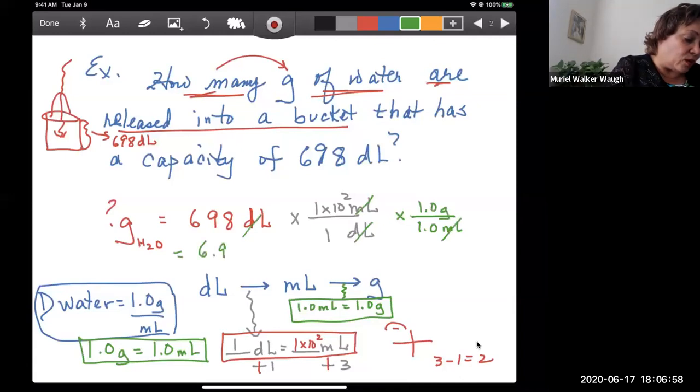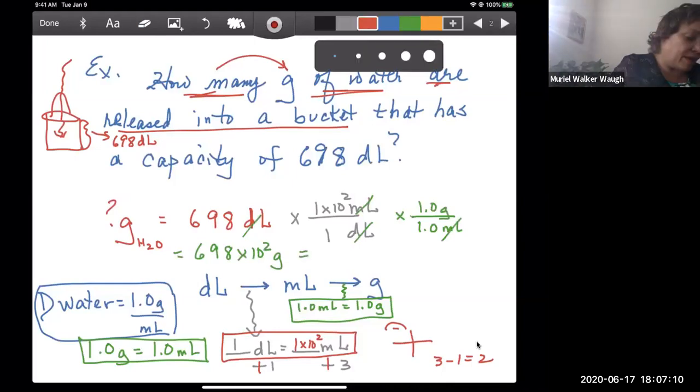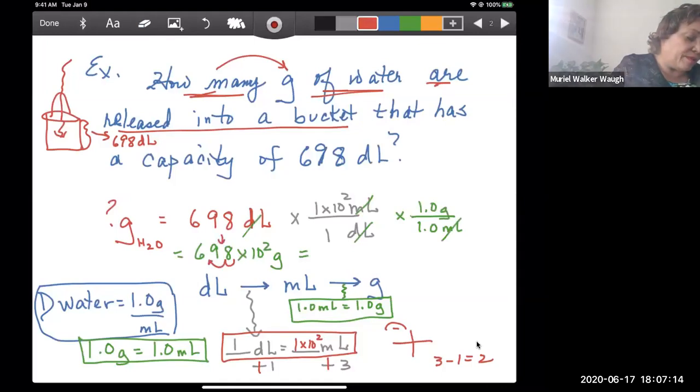Your deciliters cancel, so your answer becomes 698 times 10 to the 2 grams. And in scientific notation, bouncy bouncy, made the power 10 smaller, excuse me, decimals smaller, and then the power 10 goes up. So that's 6.98 times 10 to the 4th grams. That is the answer.